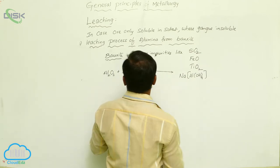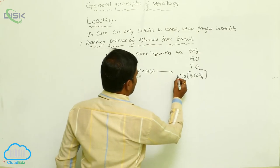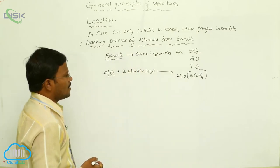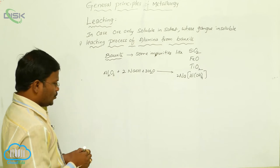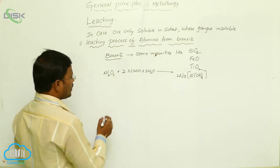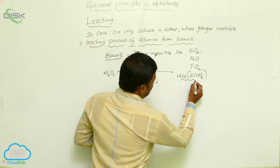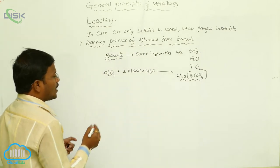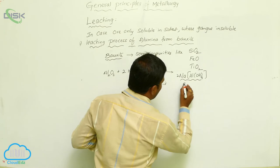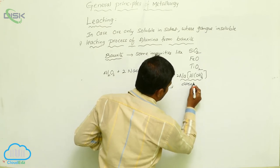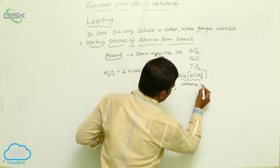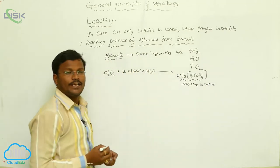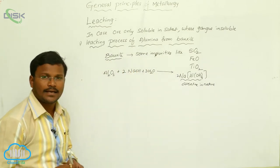The product formed is sodium aluminate. Here, 2 moles of sodium aluminate are formed as the product. The nature of the formed sodium aluminate is alkaline in nature.